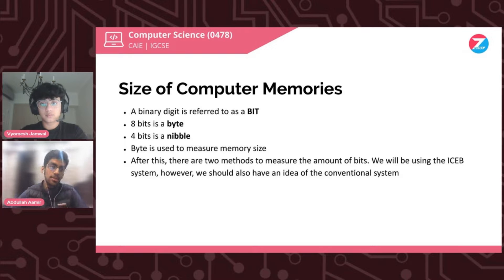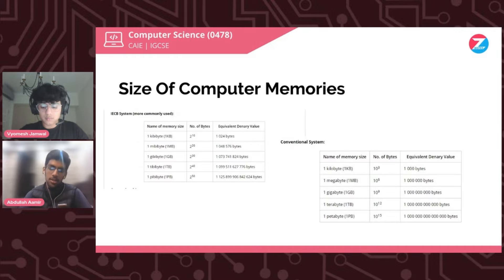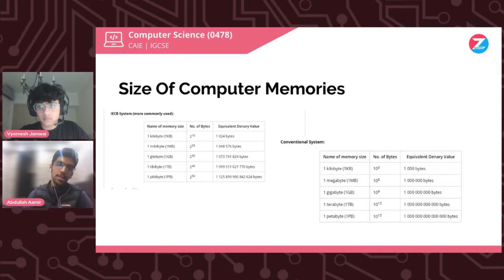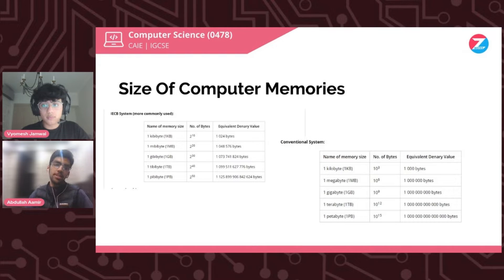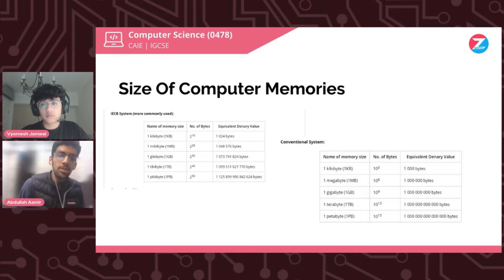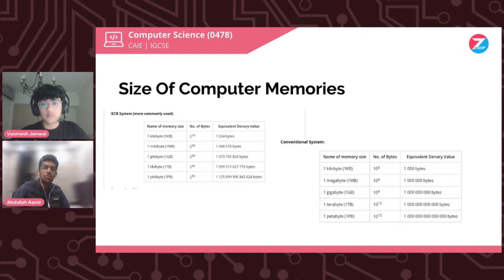We will be using the IEC system in the exam. In this system, we take powers of two multiplied by tens. One Kibibyte (1 KiB) is 2 to the power of 10. One Mibibyte is 2 to the power of 20. One Gibibyte is 2 to the power of 30. One Tebibyte is 2 to the power of 40. One Pebibyte is 2 to the power of 50. A useful tip: 2 to the power of 10 is 1024, so when converting from one unit to another, keep dividing by 1024.